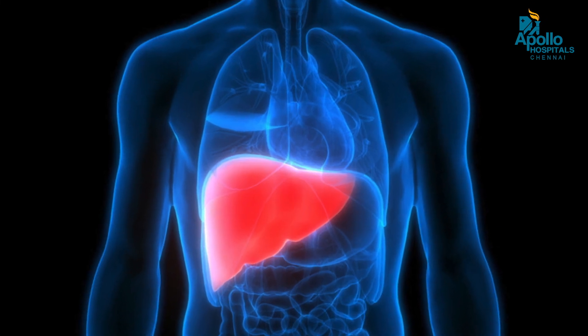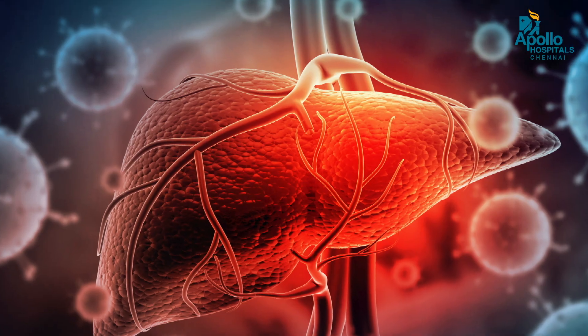The second stage occurs when the fat grows too much and the cells start to break — this is called the hepatitis stage. If the same process continues, it will form a scar, which is called the fibrosis stage.